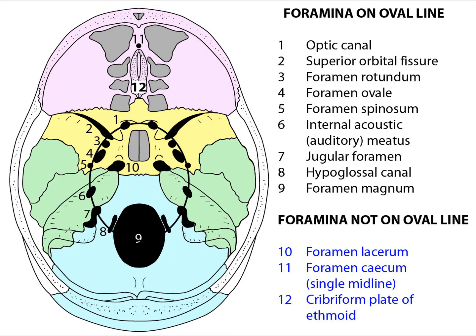Next we have foramen rotundum, which is label three, and through here we have the maxillary division of the trigeminal nerve, passing into the pterygopalatine fossa. Number four is the foramen ovale, for the mandibular division of the trigeminal nerve and the lesser petrosal nerve.